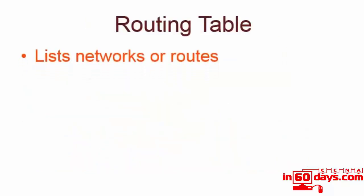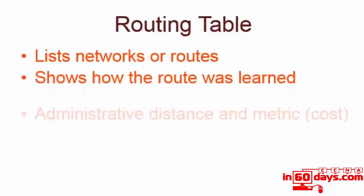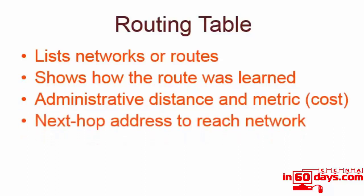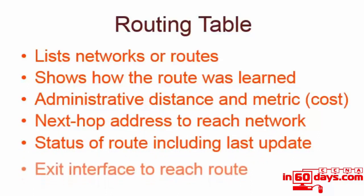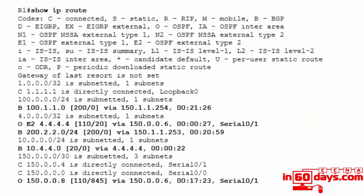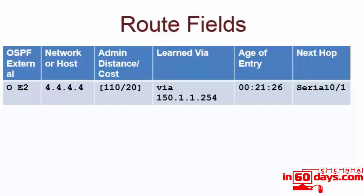The routing table, which you'll be seeing a lot as you do the labs, lists a network of routes. It shows how the route was learned, the administrative distance and the cost, and the next hop address to reach that network. It also shows the status of the route including the last update and the exit interface. Here's a 'show IP route' on a router that is running several routing protocols, with the information highlighted. For an OSPF external route for example, you can see the network or host, administrative distance and the cost, which IP address the route was learned by, how old the entry is, and the next hop address.